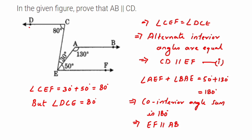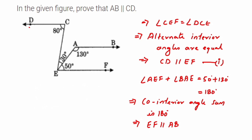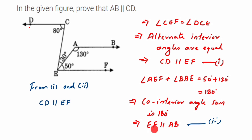Now coming to the conclusion part. From equation 1 and 2: the first one says CD is parallel to EF, and the second one says EF is parallel to AB. So we have CD parallel to EF and EF parallel to AB, which means CD is parallel to AB, or equivalently AB is parallel to CD. We have used the properties of lines and angles to show that these two lines are parallel.